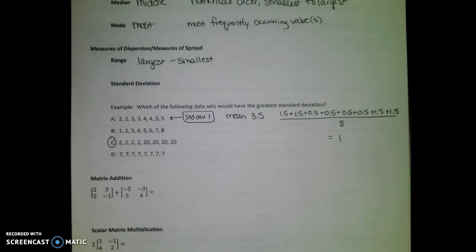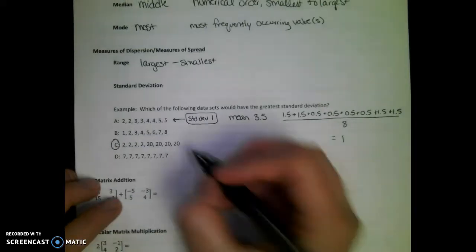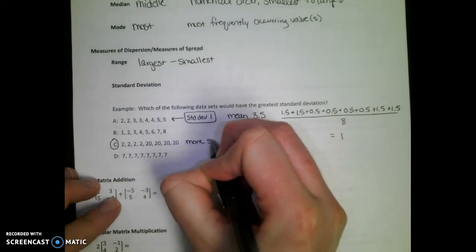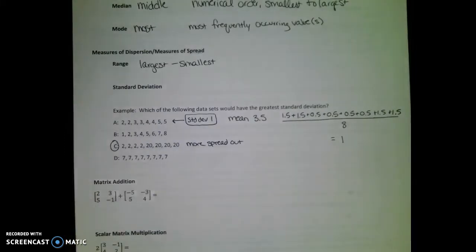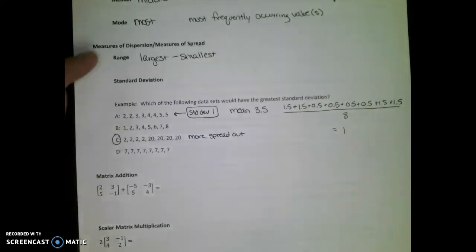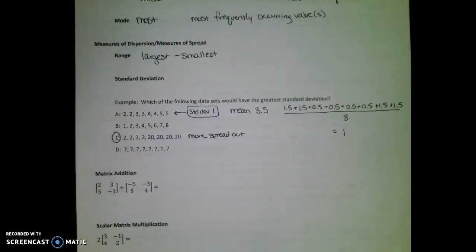So notice that A, B, and D are all very, very clustered around the middle number. C is much more spread out. So I'm going to write down more spread out. The ACT likes to throw some things at you to try to shake your confidence. So they'll give you a question about standard deviation thinking, oh, they don't know this term. It's going to throw them off and they're not going to know how to do this problem. But if you know that standard deviation is kind of like range and it measures how spread out the data is, you could guess this question and probably get it correct.